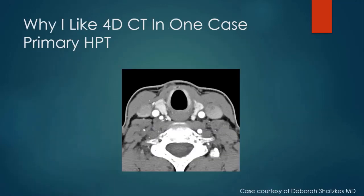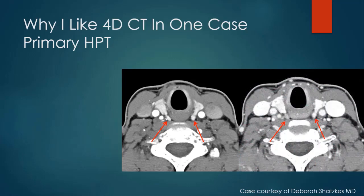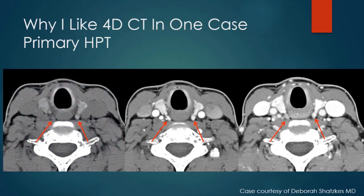This single case, loaned to me by Dr. Shatski, distills why I like 4D CT. This patient with primary hyperparathyroidism: if we did only an early arterial phase exam, most of us would wonder if the patient had two parathyroid adenomas — two small lesions posterior and medial adjacent to the esophagus near the tracheoesophageal groove. But looking at additional images — specifically a washout image — it is very clear that the lesion on the patient's right washes out, while the lesion on the left maintains the same density as thyroid tissue. Throwing in the non-contrast examination confirms: the left nodule is just thyroid tissue, and the lesion on the right is the parathyroid adenoma, surgically confirmed.